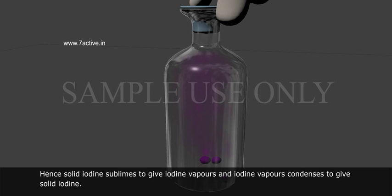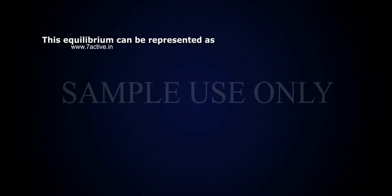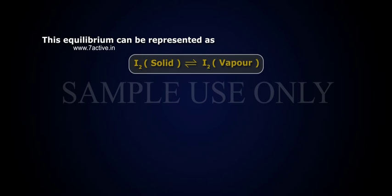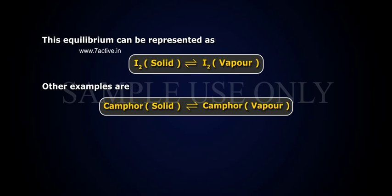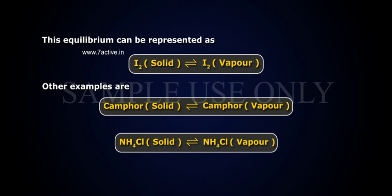Hence, solid iodine sublimes to give iodine vapors and iodine vapors condense to give solid iodine. This equilibrium can be represented as I2 solid in equilibrium with I2 vapor. Other examples are camphor solid in equilibrium with camphor vapor, and NH4Cl solid in equilibrium with NH4Cl vapor.